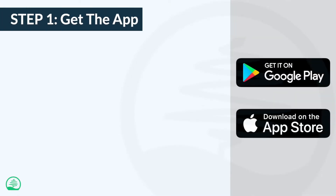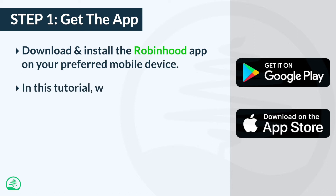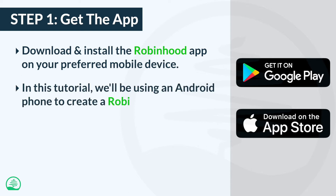Since you'll be using your phone to create a Robinhood account, the first thing you need to do is download and install the Robinhood app. In this tutorial, we'll be using an Android phone. But don't worry, if you're an iPhone user, you can still follow along because the steps are basically the same. So grab the app and let's continue.